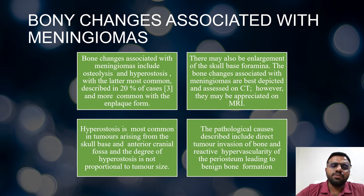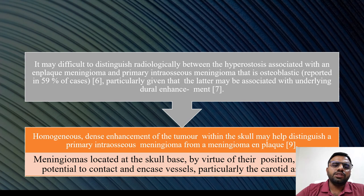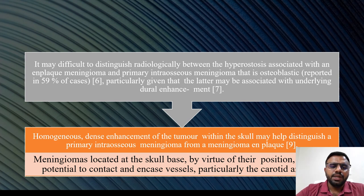Hyperostosis is most common in tumours arising from the skull base and anterior cranial fossa, and the degree of hyperostosis is not proportional to tumour size. Pathological causes include direct tumour invasion of the bone and reactive hypervascularity of the periosteum leading to benign bone formation. It may be difficult to distinguish radiologically between hyperostosis associated with en plaque meningioma and primary intraosseous meningiomas, which are osteoblastic in 59% of cases. Skull base meningiomas may contact and encase vessels, particularly the carotid arteries.